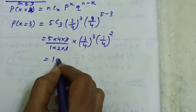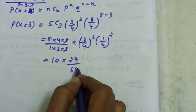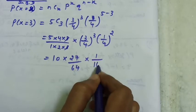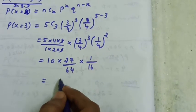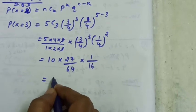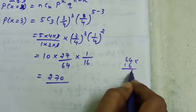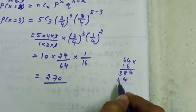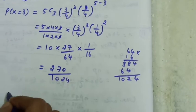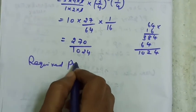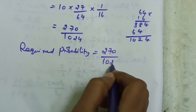After cancellation, 5C3 equals 10. Then 3 cubed is 27, 4 cubed is 64, 1 squared is 1, and 4 squared is 16. So we multiply: 10 × 27 = 270, and 64 × 16 = 1024. The required probability is 270/1024.